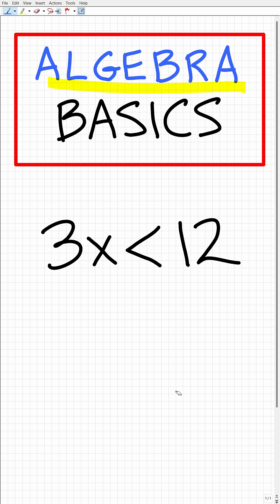Alright, so let's go ahead and solve this inequality right here. The main idea is that you want to treat an inequality temporarily as like an equation. So we have 3x is less than 12. To solve this, what we're going to do is divide both sides of the inequality by 3. So we have x is less than 4.